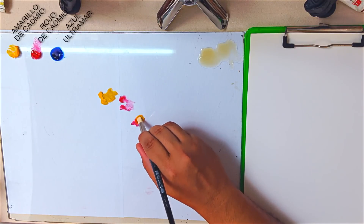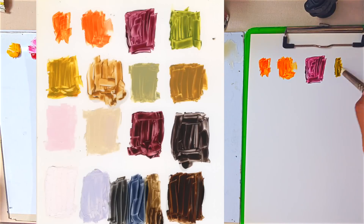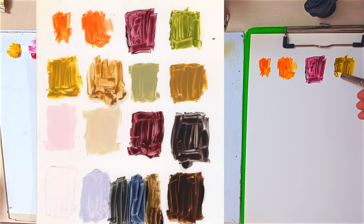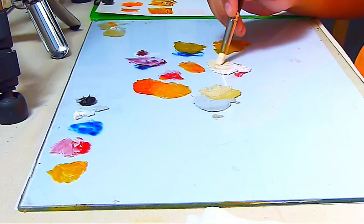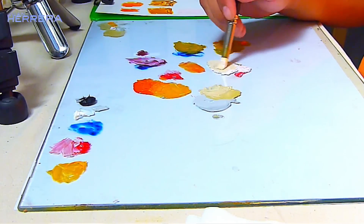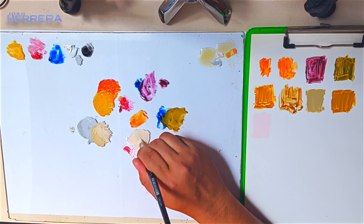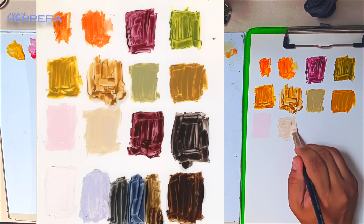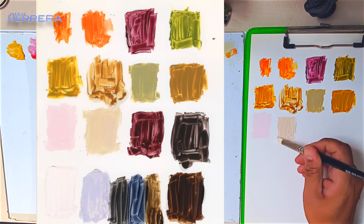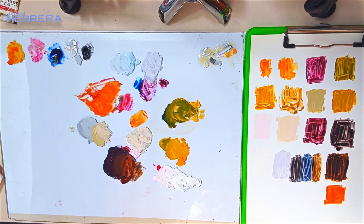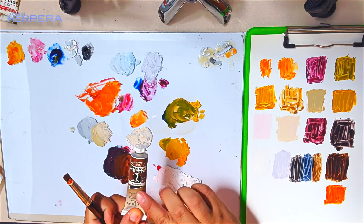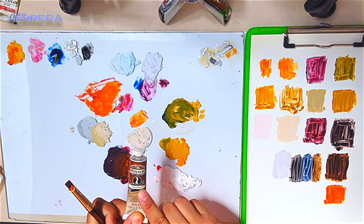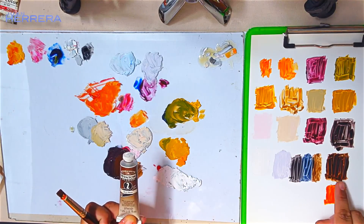Te vamos a guiar paso a paso en la mezcla de colores, obteniendo así los colores más importantes para la pintura. A partir de colores primarios, más blanco y negro, vamos a hacer una gama de colores muy útil en la pintura: para la pintura de las pieles, sus sombras, sus valores medios, todo paso a paso, para que puedas construir y entender los colores desde sus formas más básicas.